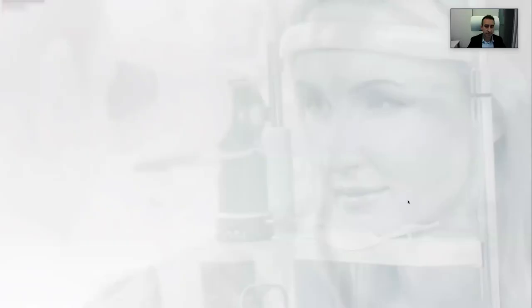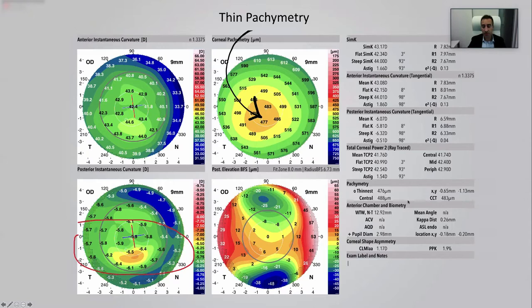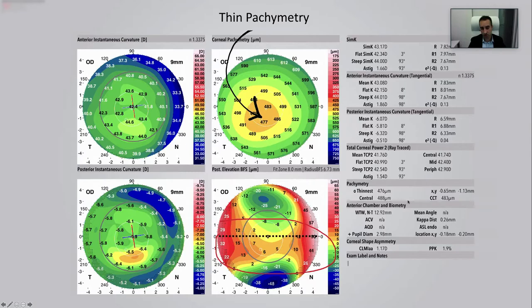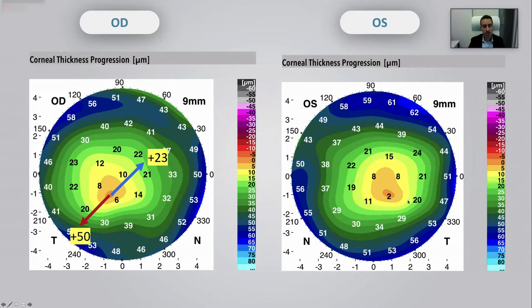A few cases to discuss: this patient with thin pachymetry, asymmetrical bow tie, inferior steepening, and posterior curvature showing double inferior steepening. The best fit sphere (BFS) shows elevation that is completely normal and below the central meridian. The other eye similarly shows a displaced apex but nothing really abnormal. Looking at the thickness progression maps, there is obviously an increased progression infero-temporal compared to supero-nasal — 50 microns at four millimeters, matching our keratoconus criteria. The difference is more than 21, also positive for keratoconus. The other eye is even more dramatic at 55 microns at four millimeters.